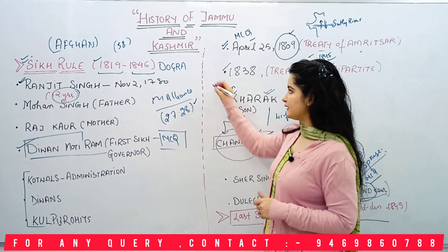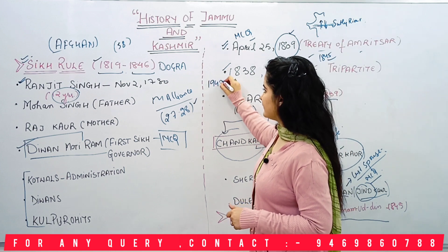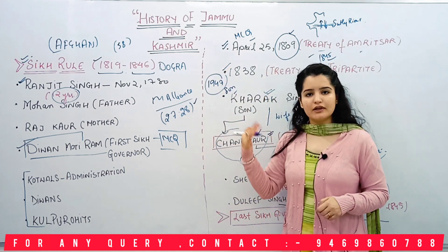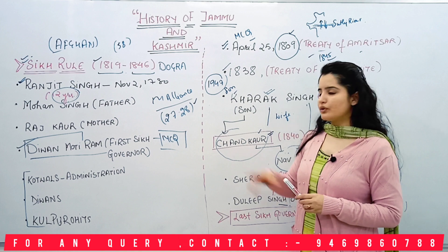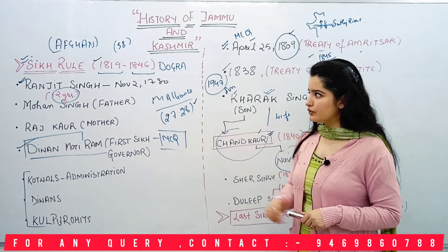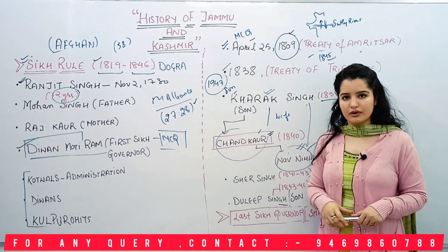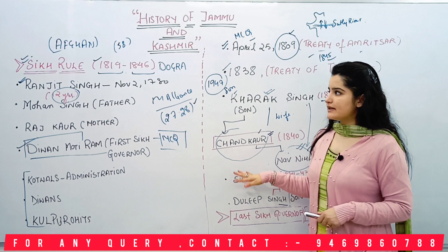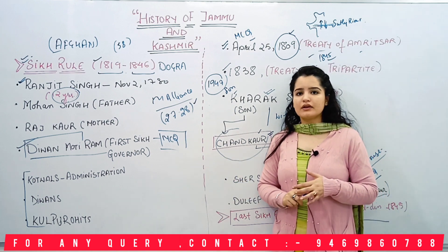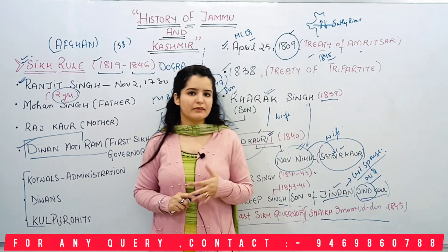The Dogra rule ended in 1947 when it was defeated and partition began. After covering the Sikh rule, I will cover the Dogra rule next. I will also take some MCQs, as some of you requested in the comment section.